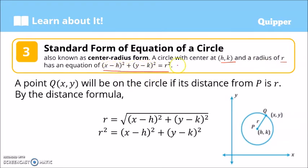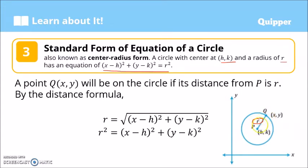The standard form of the equation of the circle is based on the distance formula. We use the formula for getting the distance — the radius — between the center and any point on the circle. So if we have point Q with coordinates (x, y), the distance from the center P to point Q is r. To get the length r we use the distance formula: r = √[(x − h)² + (y − k)²].